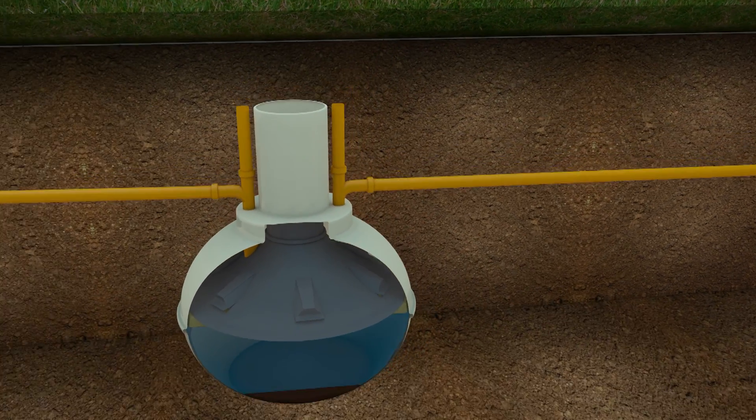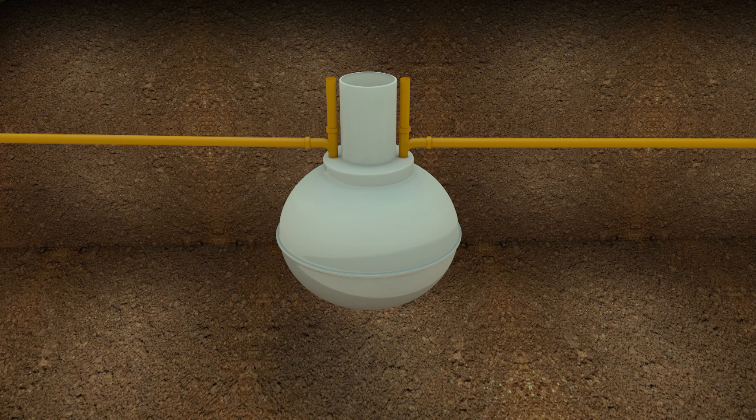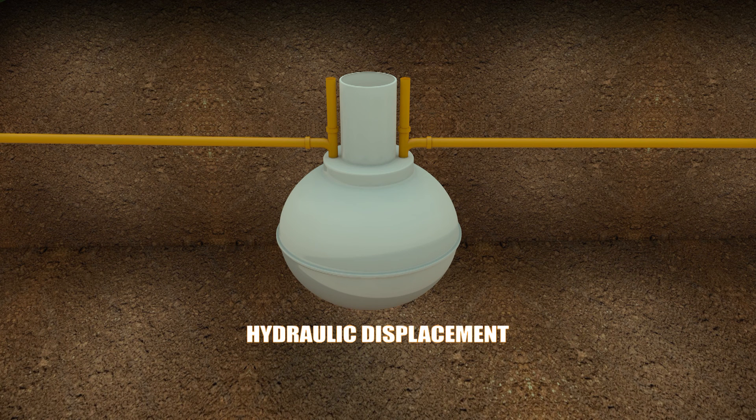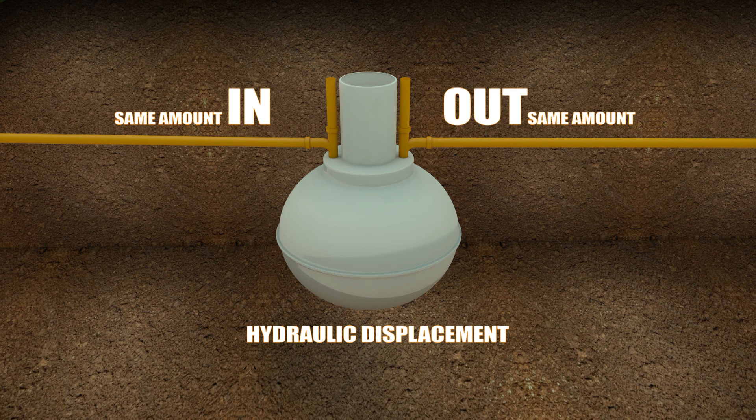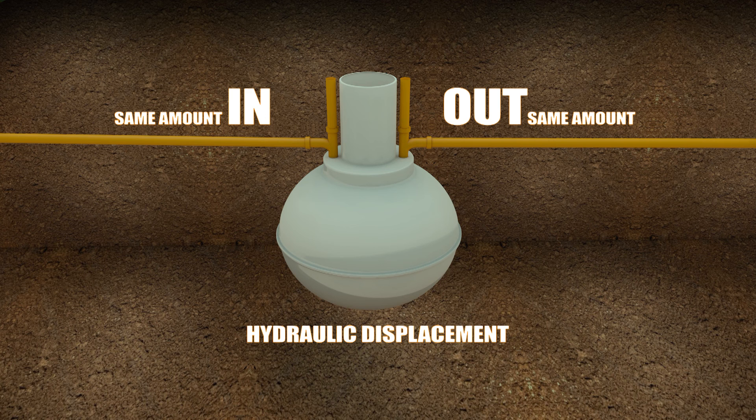Septic tanks operate on a basis of hydraulic displacement. This means that the same amount of liquid that enters the tank causes the same amount of liquid to exit the tank, regardless of the length of time the liquid has been detained in the tank to achieve settlement and separation.